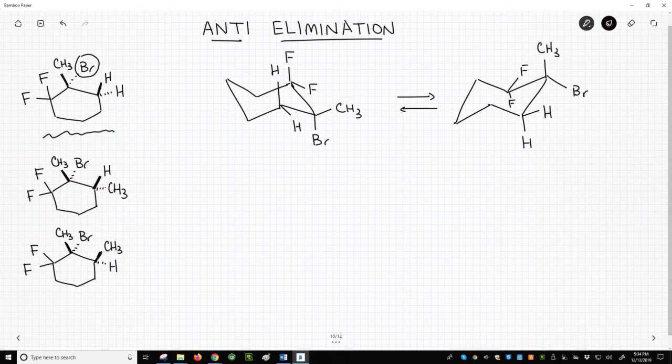For the chair on the left, we have the bromide, the bromine, it's axial down, and a beta-hydrogen which is axial up, and they have an anti-relationship.